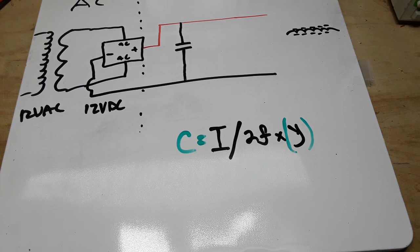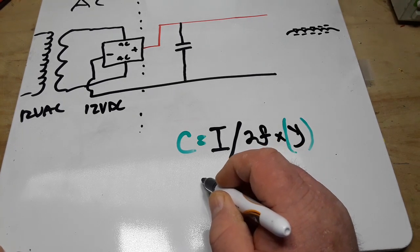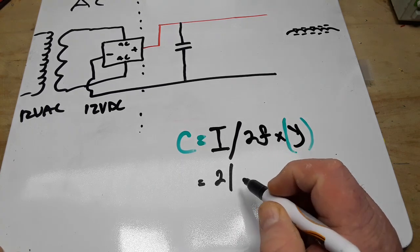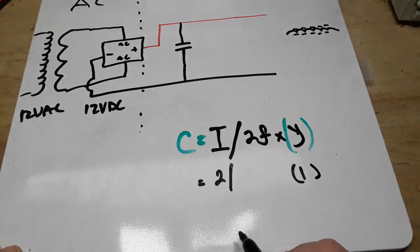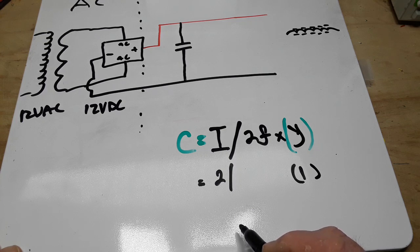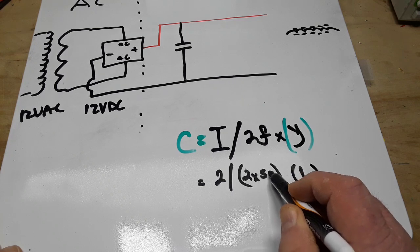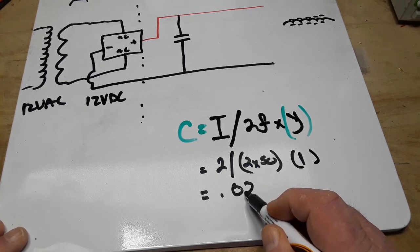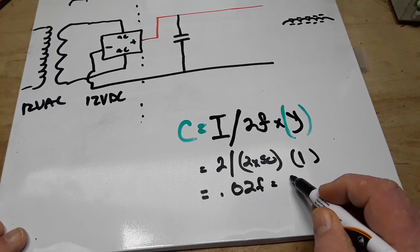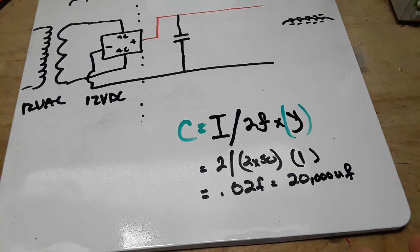So let's say that we need 2 amps. And let's say that we will allow 1 volt peak-to-peak. And let's say we're in Europe. So it's going to be 2 times 50. Well, that is going to give us a value of 0.02 farads or 20,000 microfarads. That's how you figure it out.